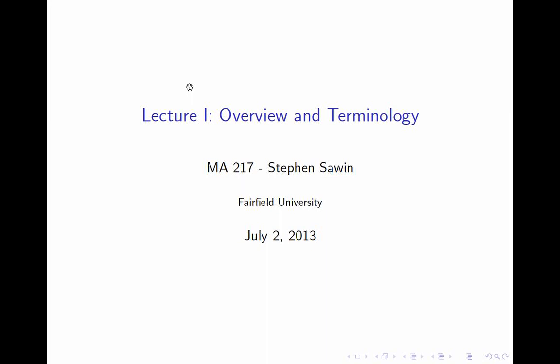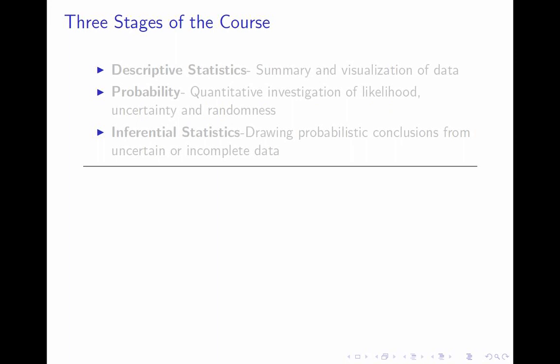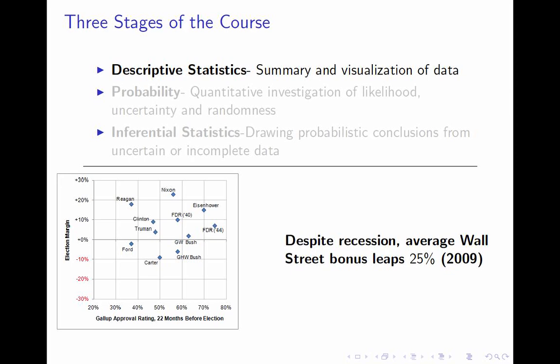This is Lecture 1: Overview and Terminology. The course has three parts. The first part, covering about the first quarter, is descriptive statistics — that is, the summary and visualization of data. It's relatively easy material but will go very fast. We will look at graphs representing data and statements summarizing data.